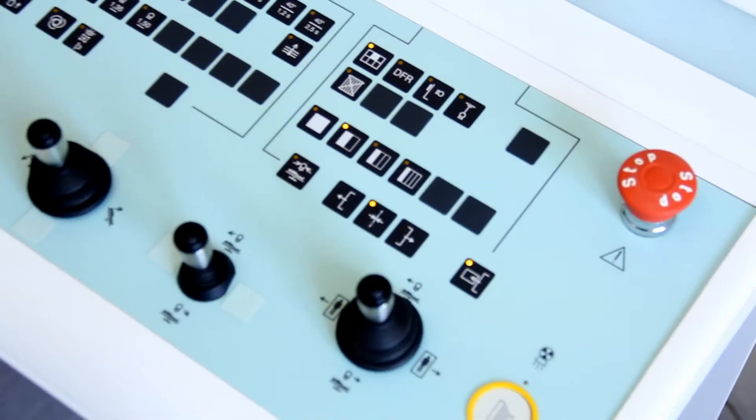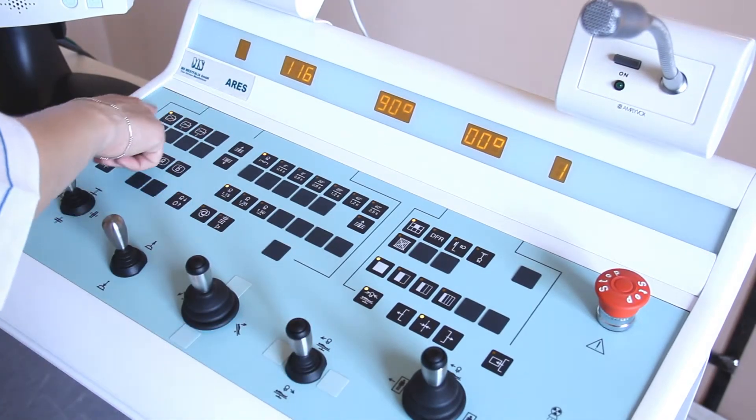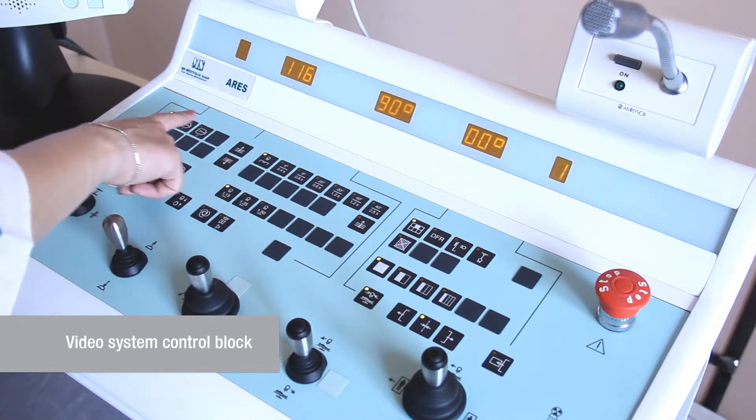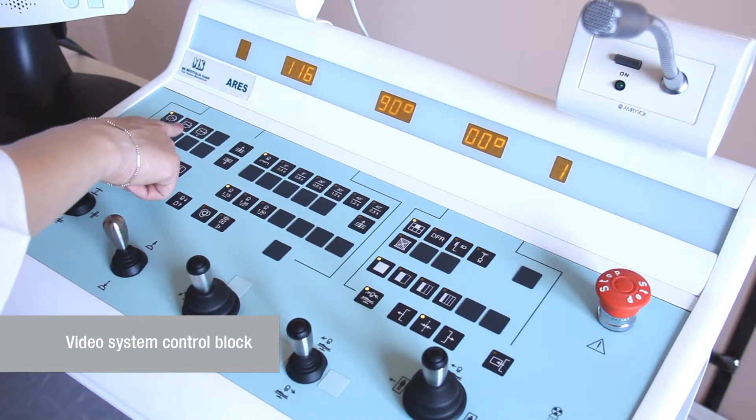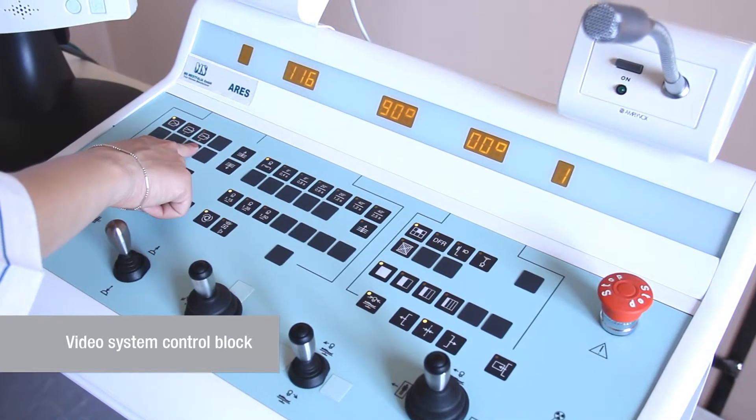The remote control panel includes a video system control block with size adjustment of the working field, a main field, and the first and second additional fields.